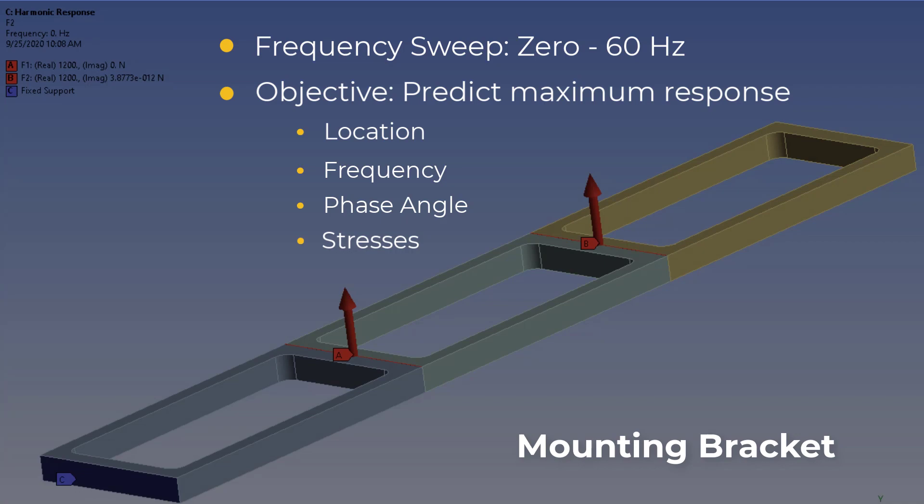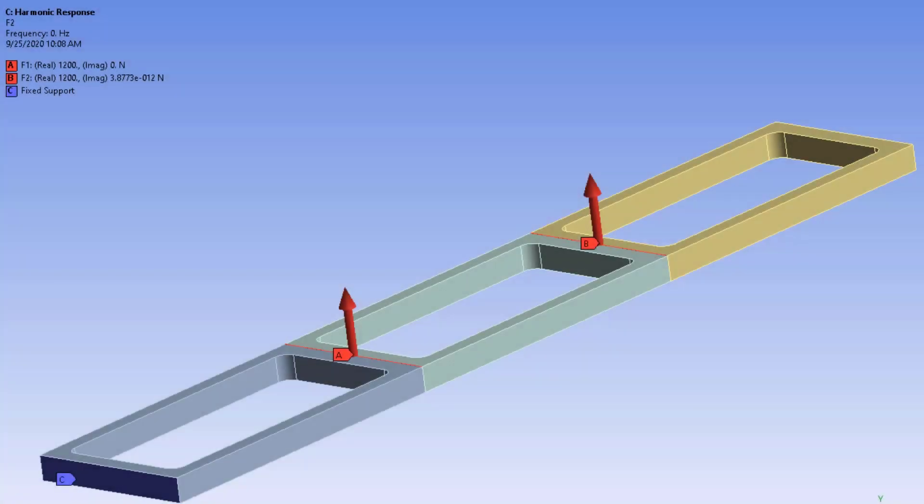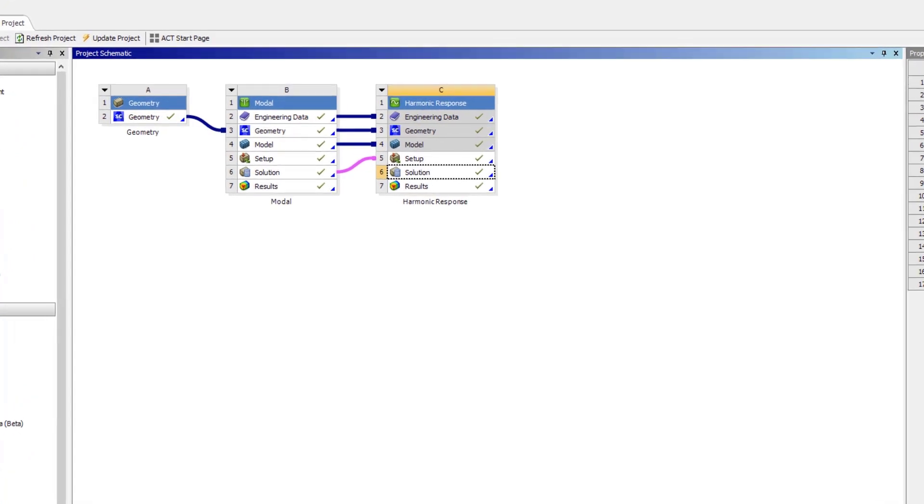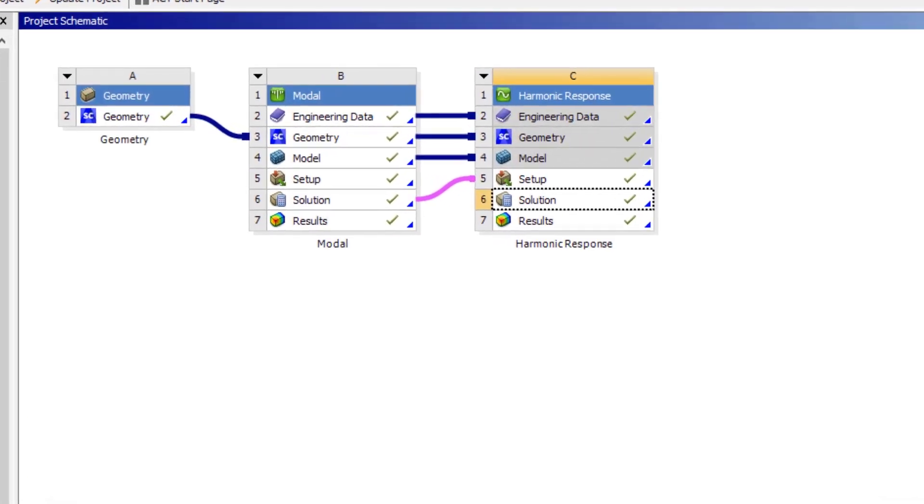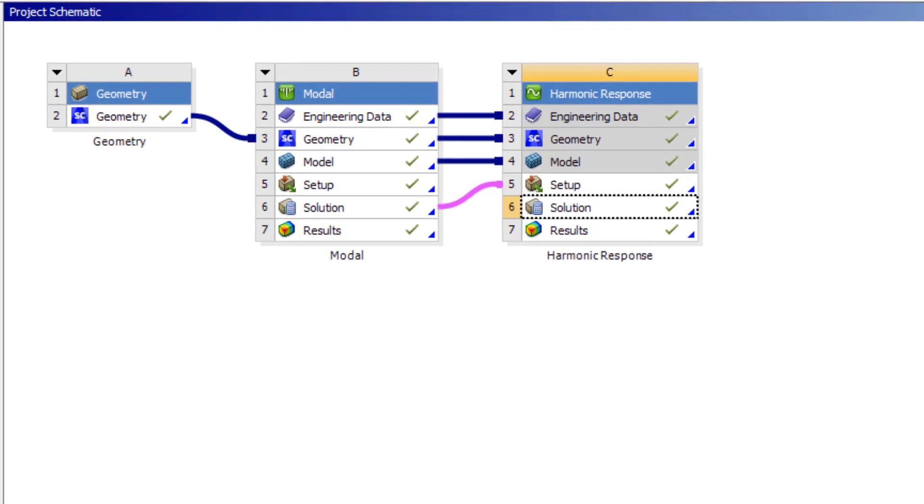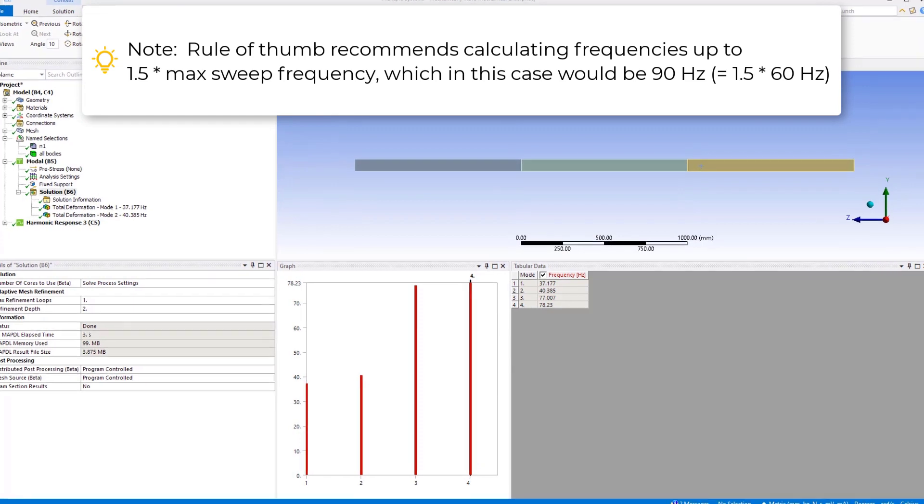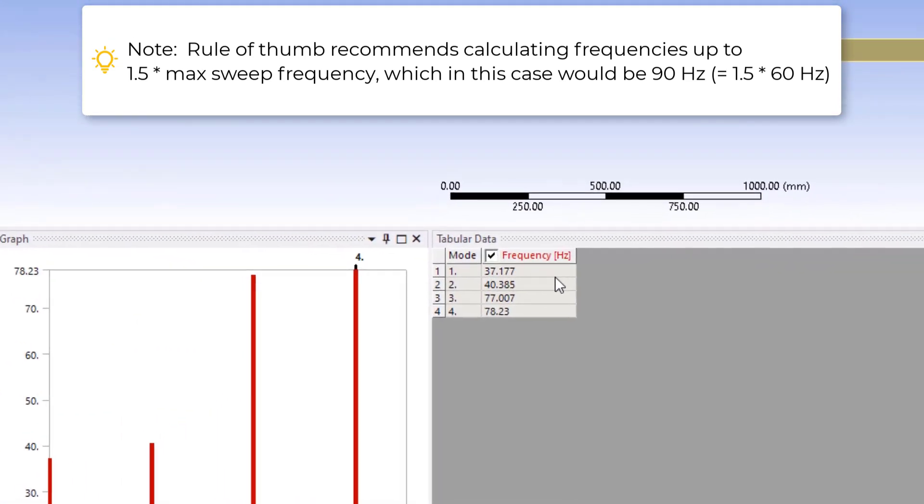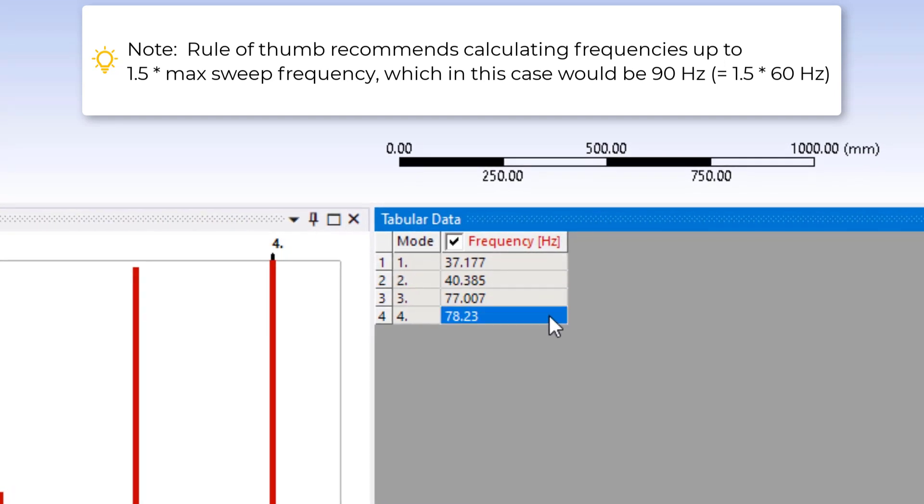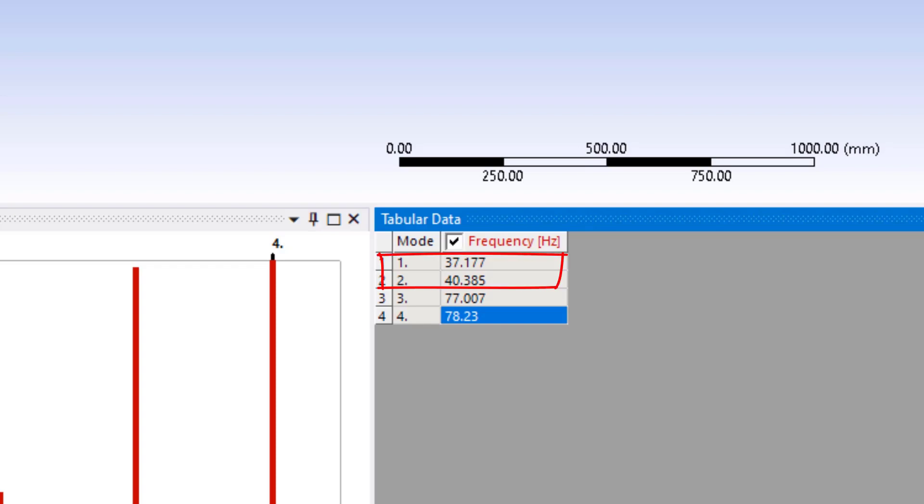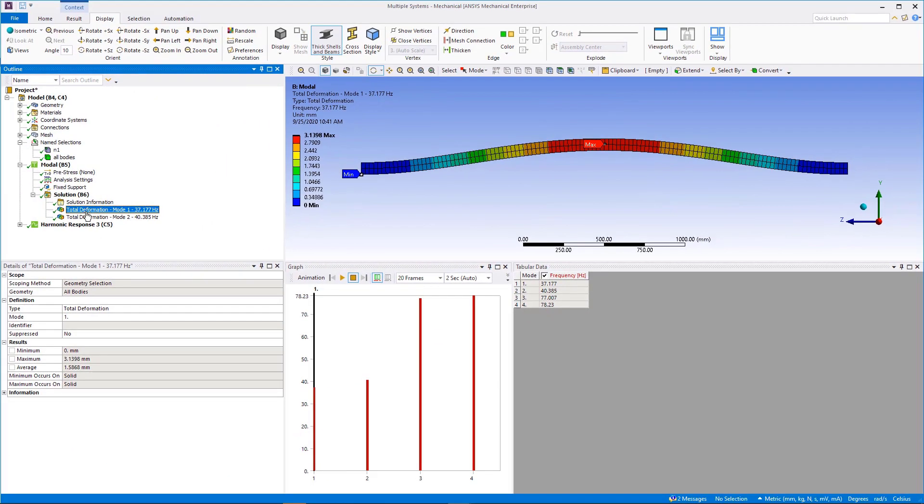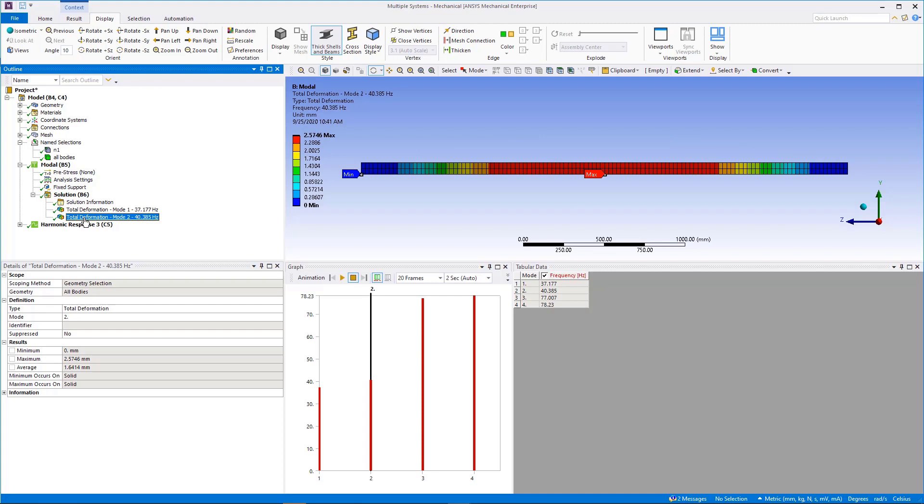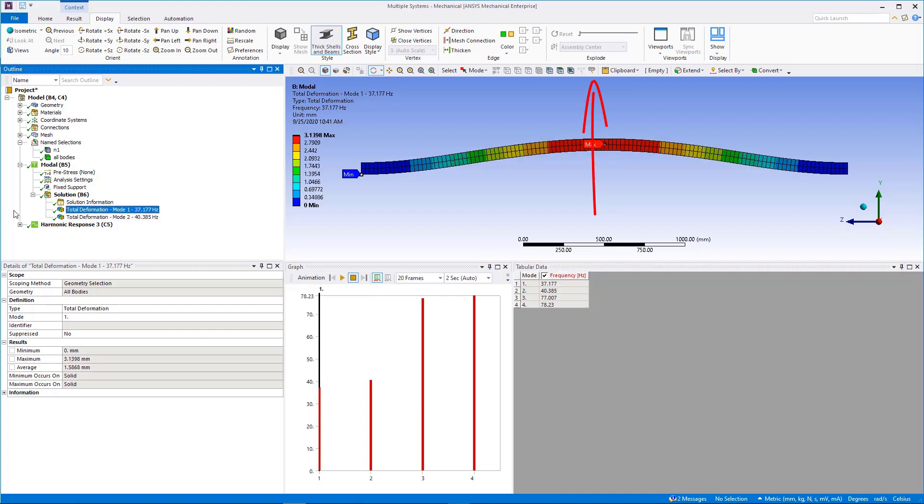For this case, the general workflow for the mode superposition harmonic analysis was already set up and the solution has been run. What remains in this exercise is to evaluate the results. The modal analysis extracted all the modes from 0 to 90 Hz. We can see by inspection of the completed modal results that the first two modes fall inside the range of frequencies under consideration. The first mode is of particular interest as its mode shape is deflecting in the same direction as the applied forces in plus and minus y direction.